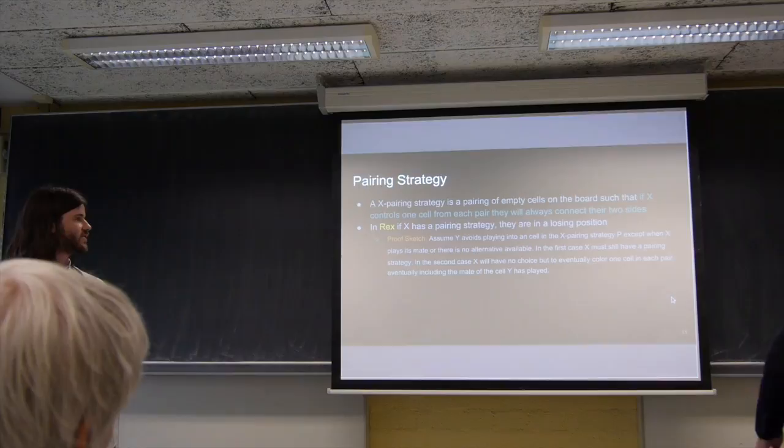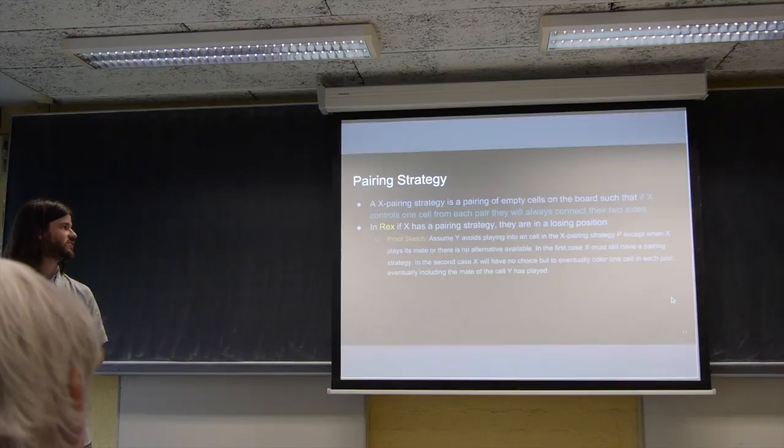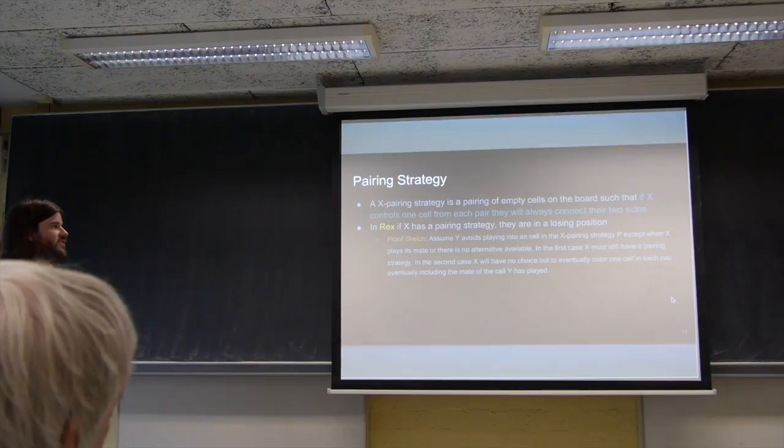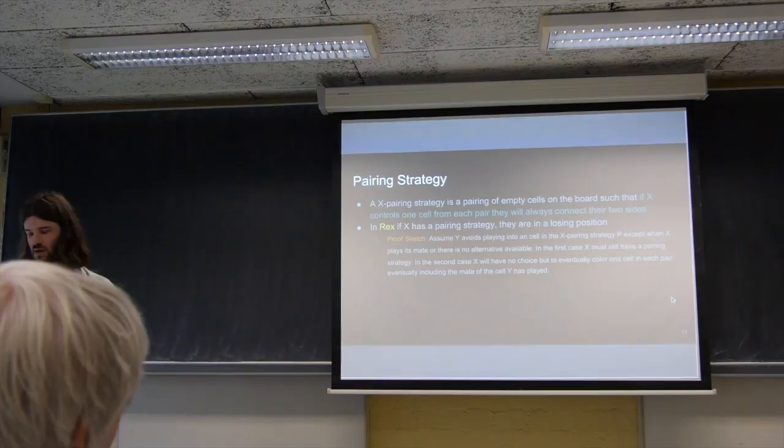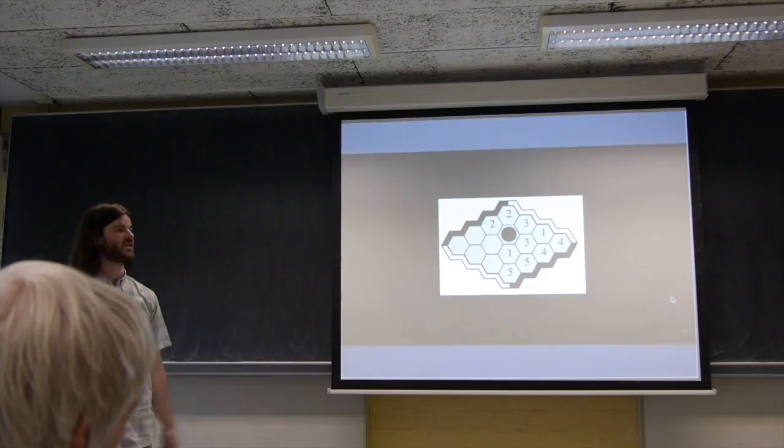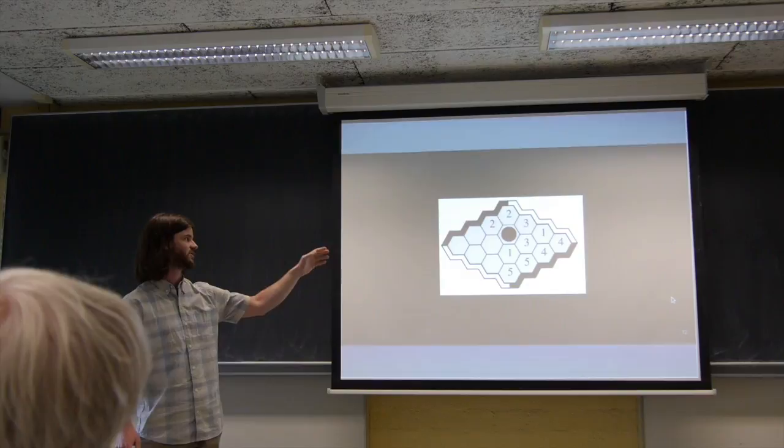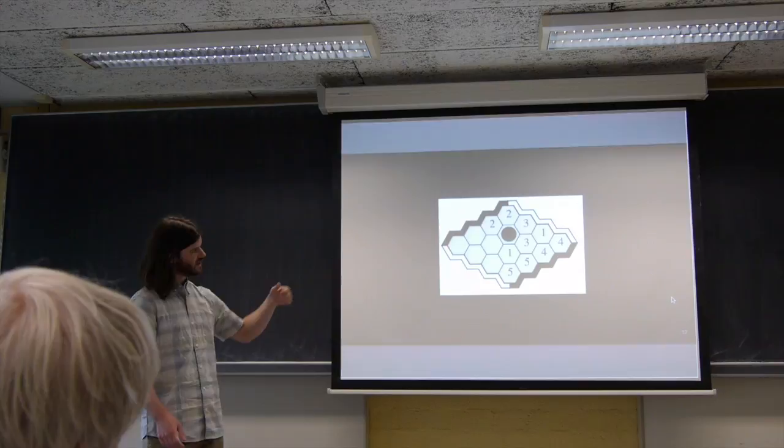The next thing I'm going to talk about is pairing strategies. And this is a mechanism we have for detecting wins and losses early. So a pairing strategy is really simple. It's just a partitioning of the stones into groups of two. Or some set of stones into groups of two. Such that if a player controls one cell from each group of two, they'll definitely connect their two sides. So they'll definitely lose if they control one of each of these cells. It looks something like this. So here you can see the numbered cells are the pairs. And hopefully it's clear that if black were to control one of each of those, they would connect their two sides and in fact lose. So we wanted to show that if black has something like this, they're going to lose. And that's pretty simple because all white has to do is avoid playing into that as long as possible. And then at some point black also wants to avoid playing into that as long as possible. Because if they ever did, white can just play the other one and it doesn't help. Black still has a pairing strategy.